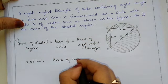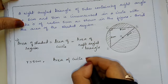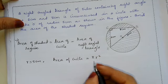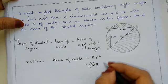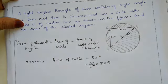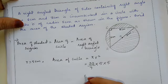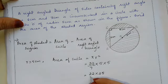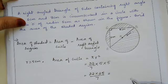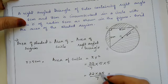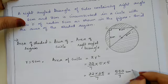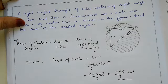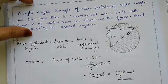Area of circle equals pi r square equals 22/7 into 5 into 5. Since nothing cancels, this gives 22 into 25 upon 7, which equals 550/7 cm square. This is the area of the circle.